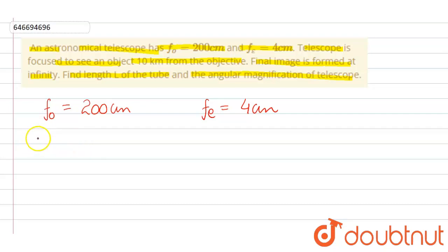Final image is formed at infinity. That means it is a condition of normal adjustment. In normal adjustment, the final image is formed at infinity.